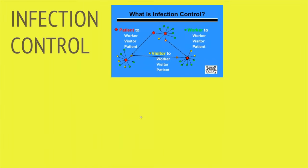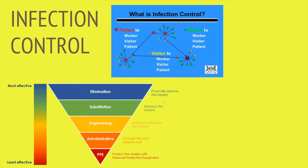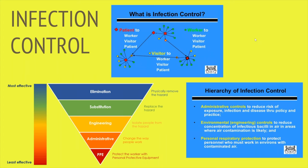Now let's discuss infection control. Infection control policies will be geared towards preventing the spread of infection. Looking at this top-down effect from the most effective: elimination physically removes the hazard; substitution replaces the hazard; engineering isolates people from the hazard; administrative changes the way people work; and PPE protects the worker with personal protective equipment. At the home health aide level, you will basically maintain the bottom three: personal protective equipment, administrative, and engineering.